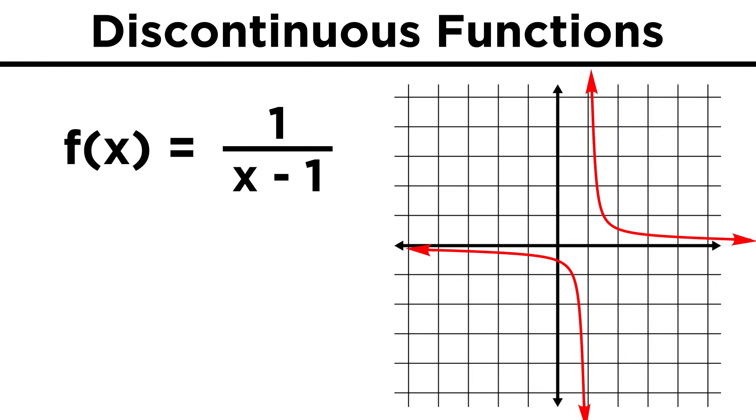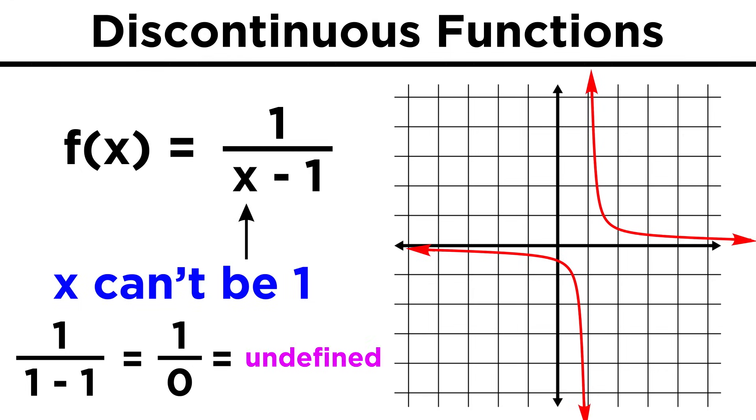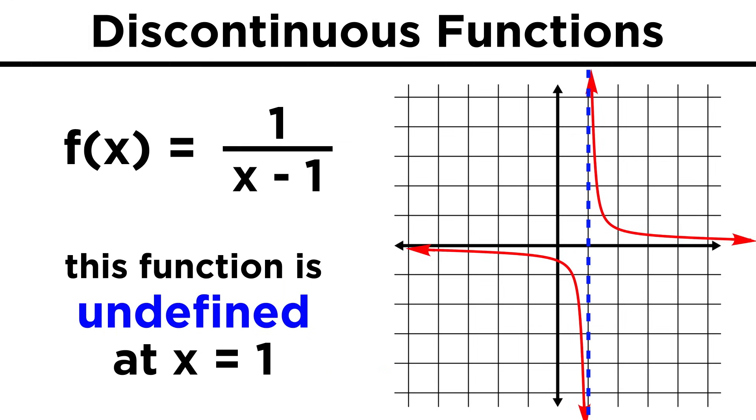Consider the function one over x minus one. As we already know, x can't be equal to one, because then the denominator would be zero, and the function would be undefined. That's why this function, when we graph it, is undefined at x equals one, meaning the function doesn't touch the line x equals one.